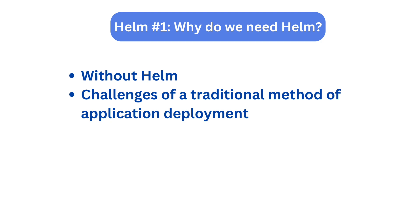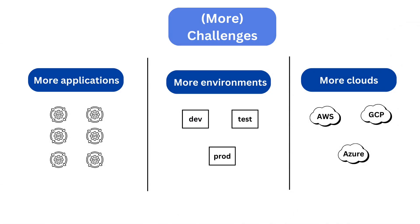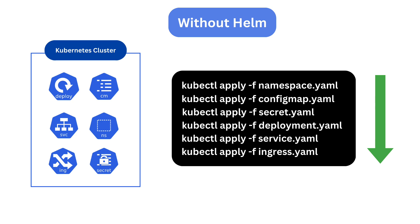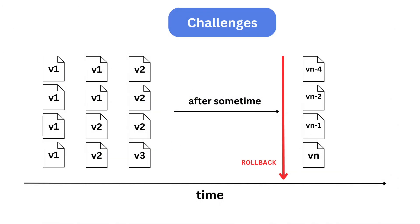Welcome to this video. In my last video, I talked about why Helm is needed in the first place — how when you use kubectl to manage your application deployments it can get tedious, because when you have multiple applications, multiple environments, or multiple clouds where your application will be deployed, you need to deploy files in a certain sequence and manually keep track of things when you roll back.